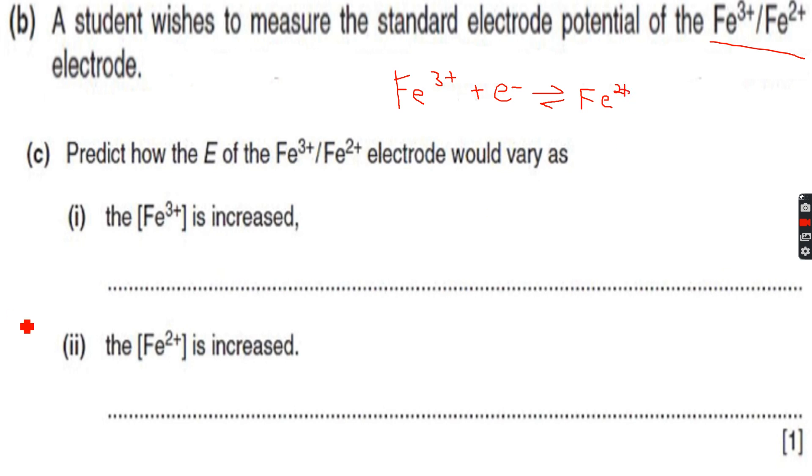Now, let's see. So predict how the E of the Fe3 plus Fe2 plus would vary as the Fe3 plus is increased. So if Fe3 plus is increased, the system will act to oppose the increase. So the equilibrium will shift to the right, making this more positive. Le Chatelier's principle.